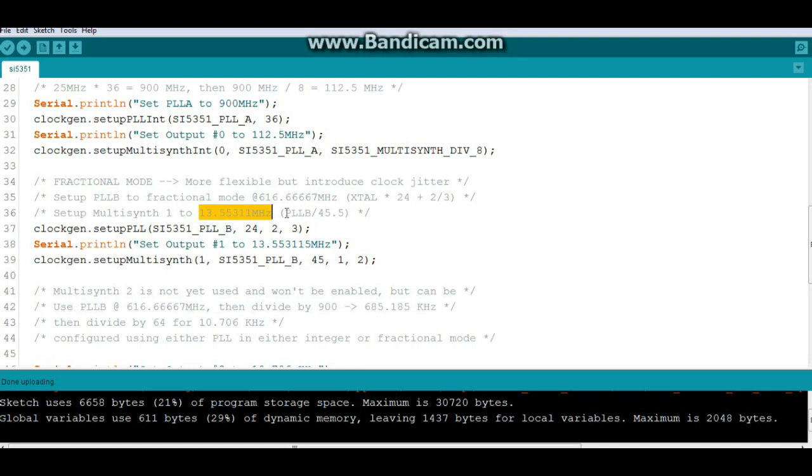And that's just our phase lock loop B divided by 45.5. So we do our ClockGen Setup PLL Si5351 PLL B 24 divided by 2 and 3 then we'll set up our multi-synth output to number 1 PLL B and it's divided by 45 relatively simple but it does require a little math.